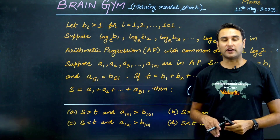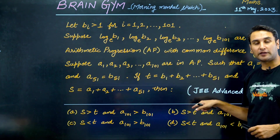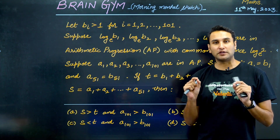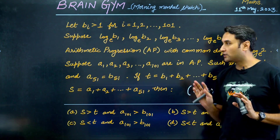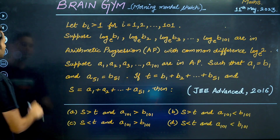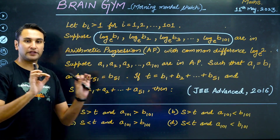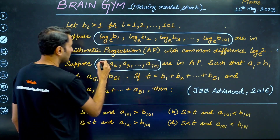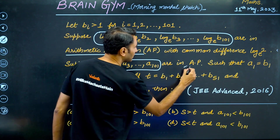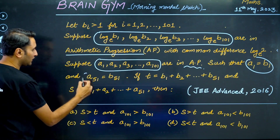First thing when you are solving Advanced level problems, you realize that the paragraph or the statements are too lengthy. By the time you end up reading the problem, you forget what was given and what was asked. So step one: just pull out the information that is meaningful for you and write it down in your notebook. For me, the meaningful information is: there is a sequence in AP. Write it down simply. Sequence of b in log AP, sequence of a in AP. In both sequences: a1 equals b1, a51 equals b51.